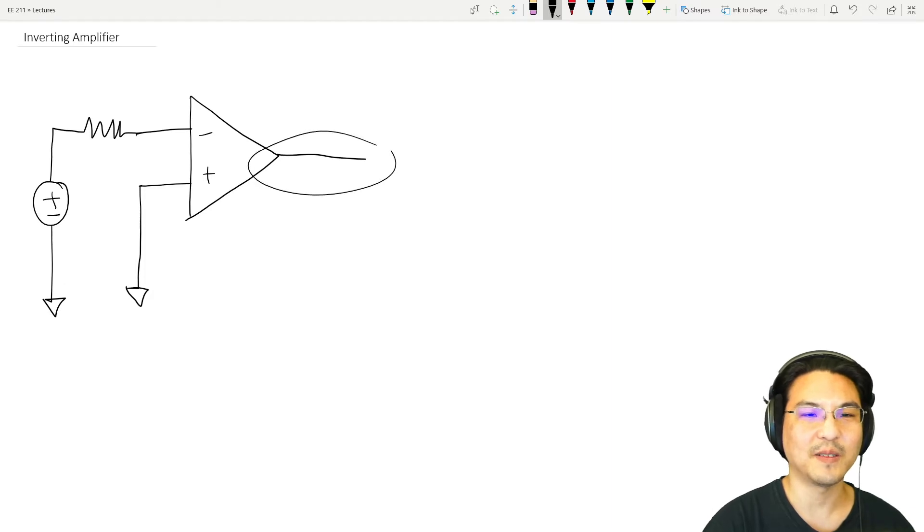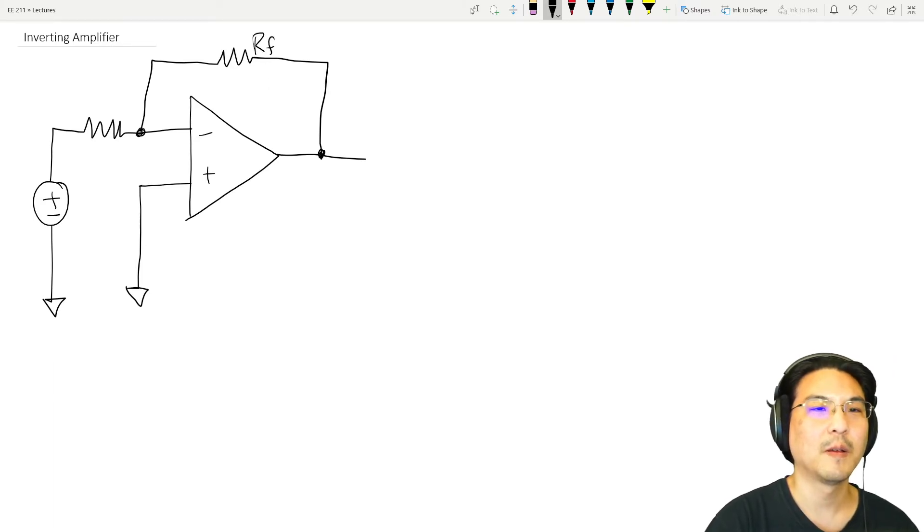The output is here. We're going to take the output and feed it back to the inverting input, but not directly—through a feedback resistor. I'll call this RF for the feedback resistor, and then this one is connected to the source or the signal.